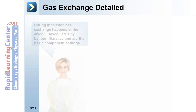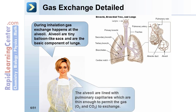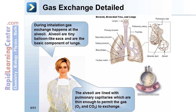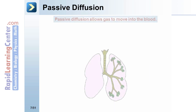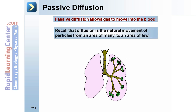During inhalation, gas exchange happens at the alveoli. Alveoli are tiny balloon-like sacs and are the basic components of lungs. The alveoli are lined with pulmonary capillaries, which are thin enough to permit gas — that's O2 and CO2 — to exchange.